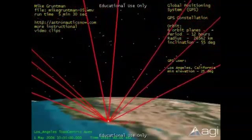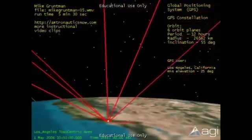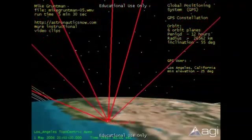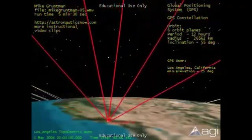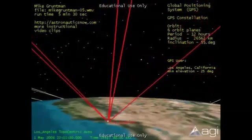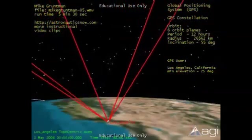These lines show a complex varying geometry of satellites available for determining user's position and time. This satellite visibility pattern is typical for the GPS constellation.